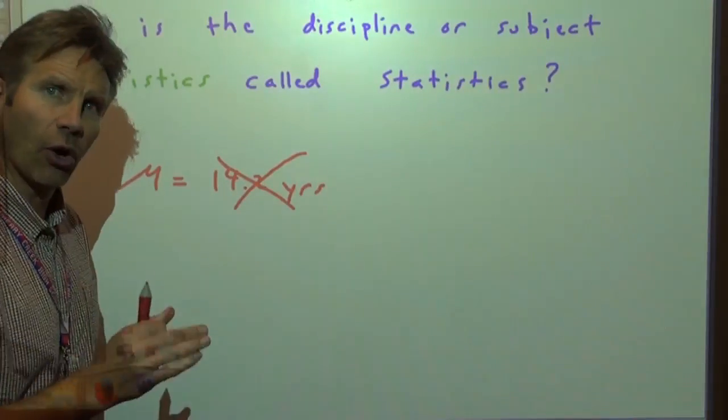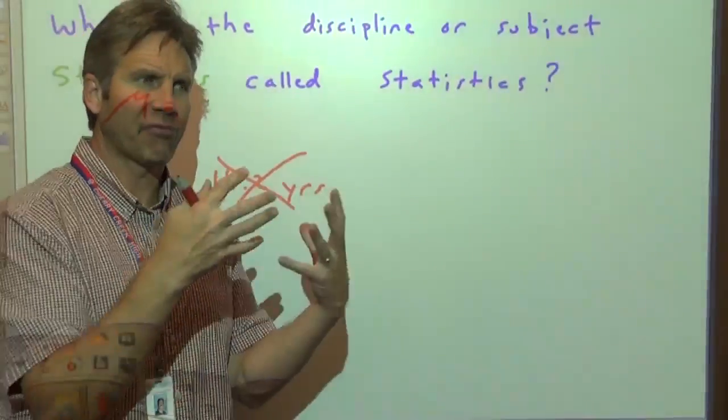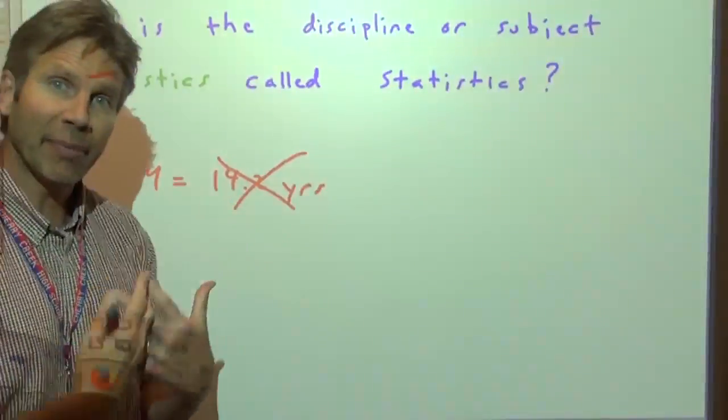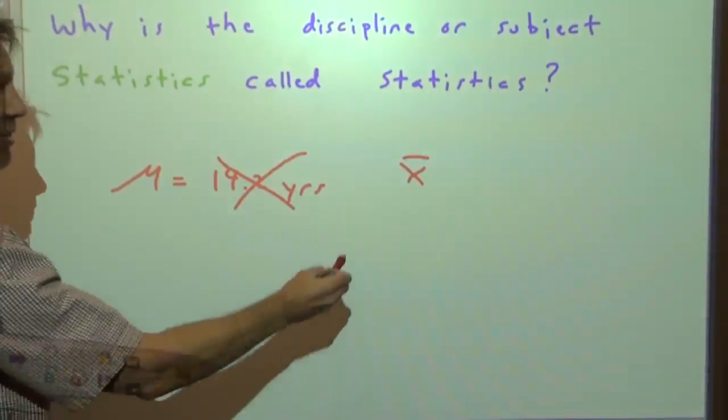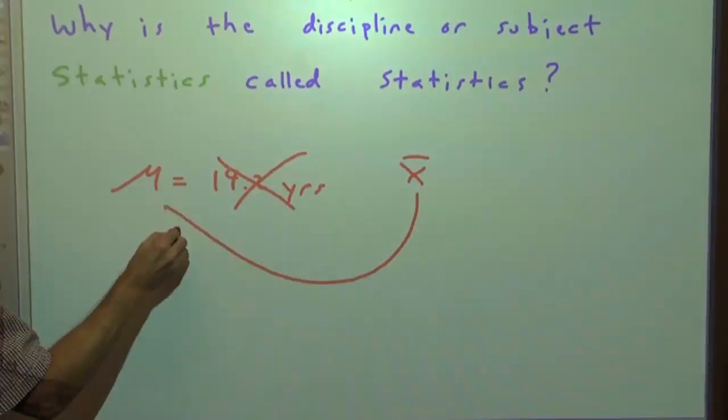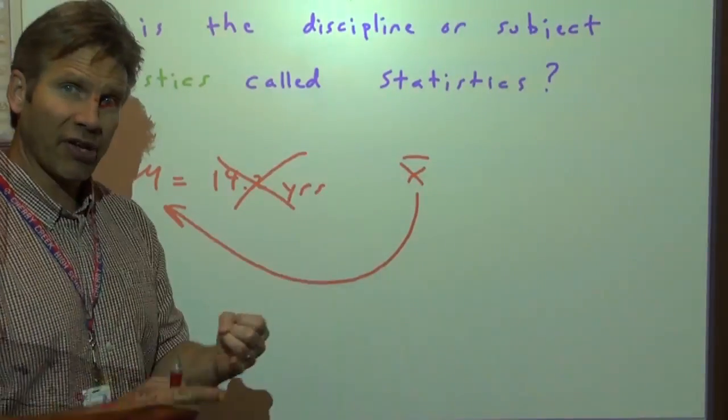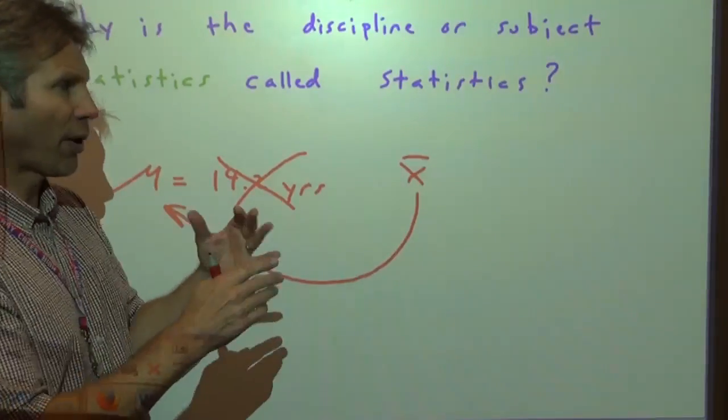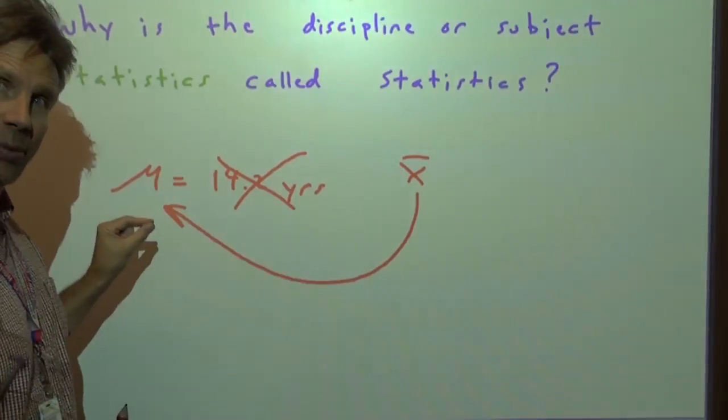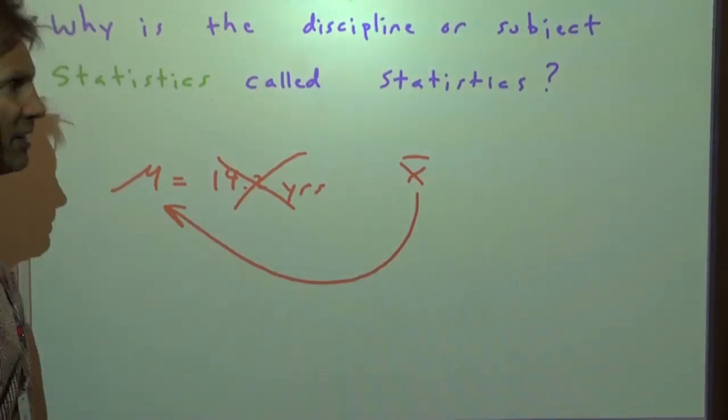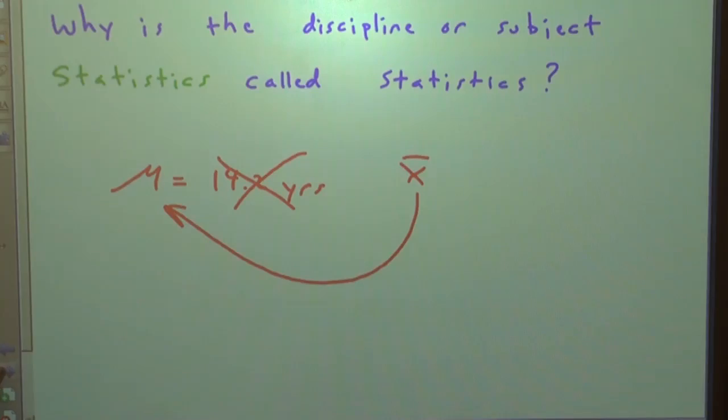we usually do not know what the population parameter is. So we learn how to take good random samples, and from those samples, we find the mean, but it's a sample mean, it is a statistic. But this statistic should be a good point estimator of the parameter, the true population mean, that we're really interested in. So the power of statistics is learning to take good random samples, use probabilities to estimate how far off this statistic could be in estimating the population parameter, but that's why it's called statistics. We use good quality statistics to estimate parameters, and that's where the big money's at. We need that information.